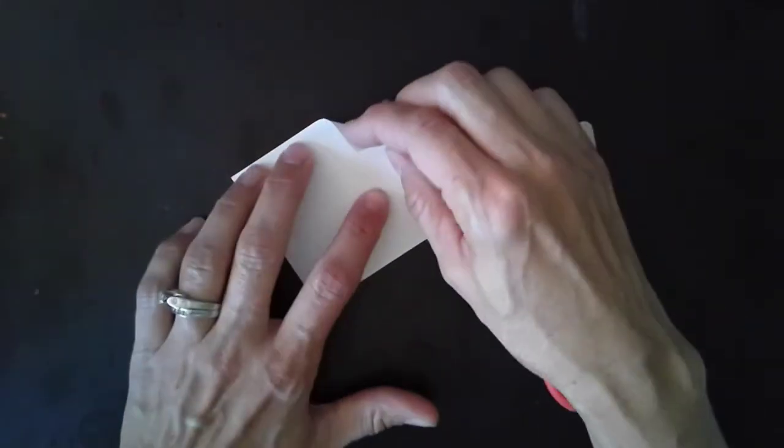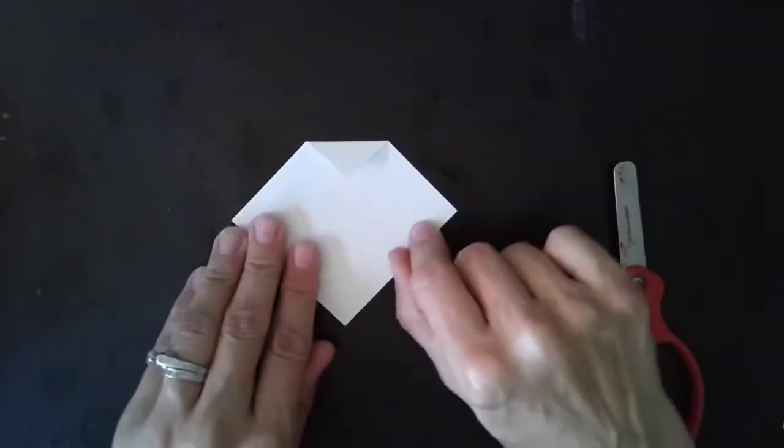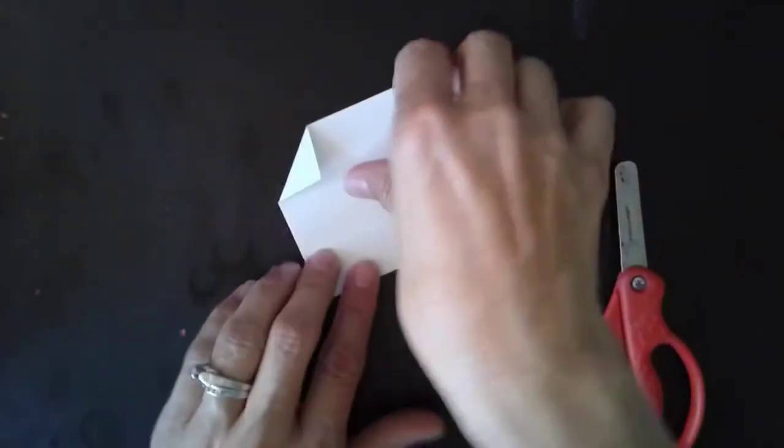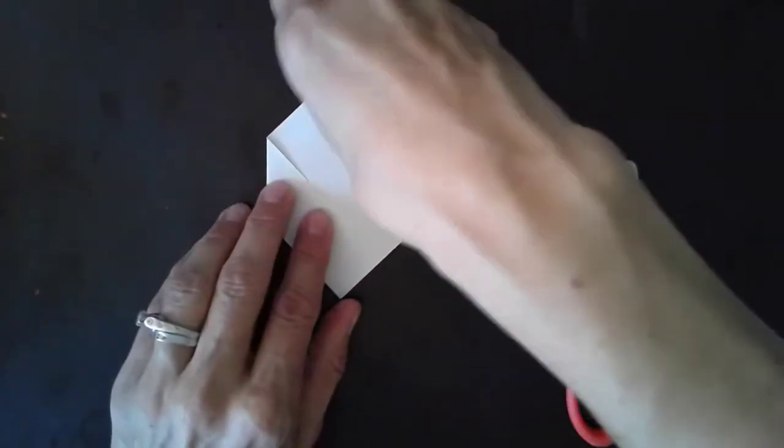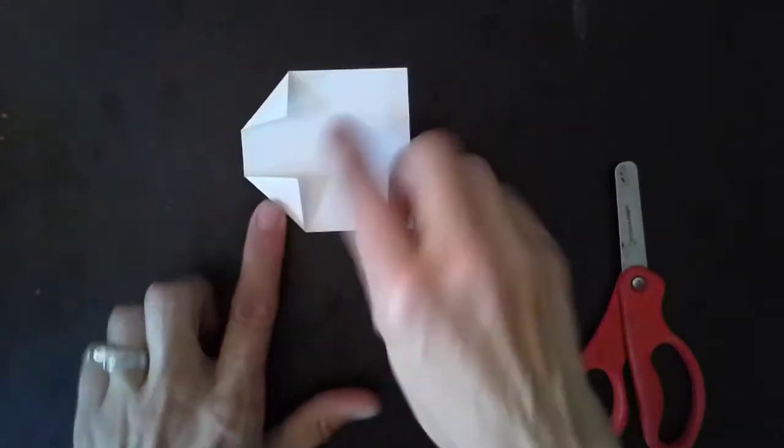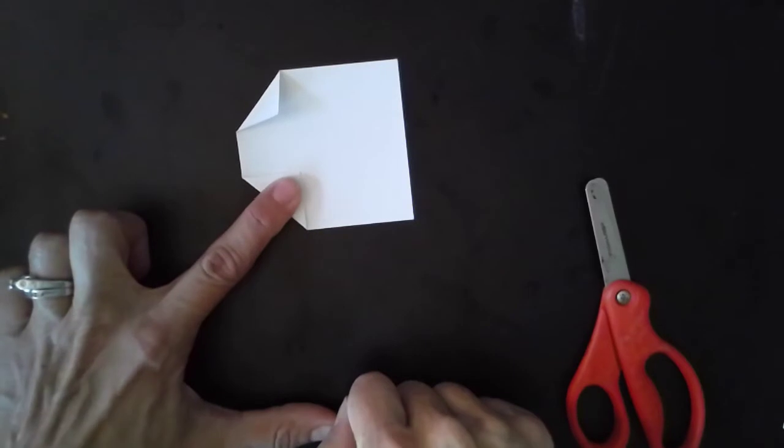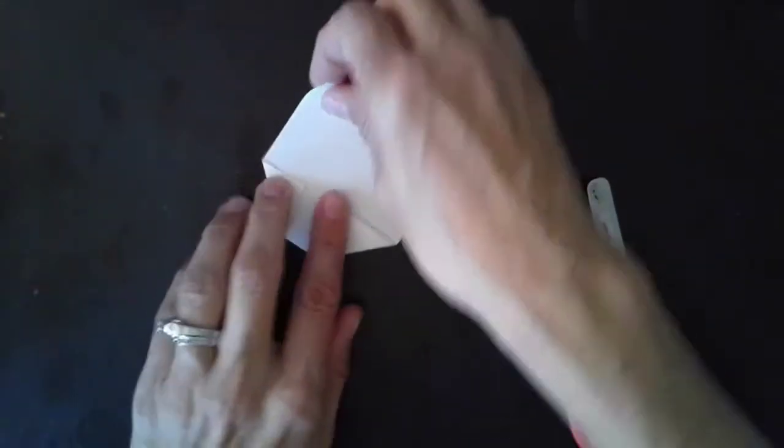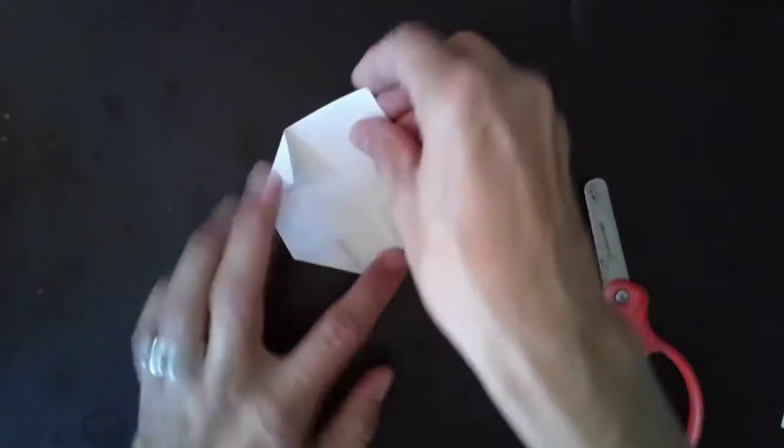Okay, the first thing we're going to do is take our corner and we're going to give it a fold, like that. And we're going to do that to each corner, so we're going to turn it and fold it. And see, my fold isn't very big, it's about the size of my fingernail. And I'm going to do it two more times, so I do it to all the corners, like that.